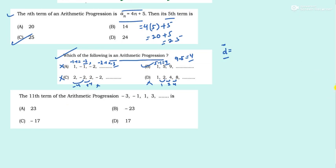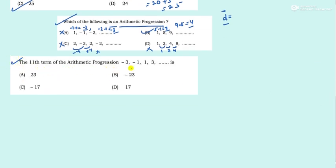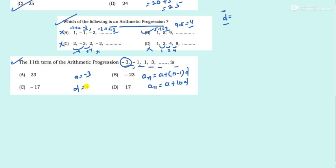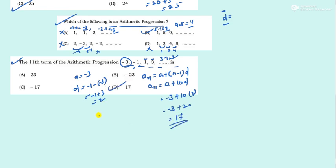Next question: Find the 11th term of an AP. Use the formula a_n = a + (n−1)d, so a_11 = a + 10d. Here a = −3, and d = a2 − a1 = −1 − (−3) = 2. Substituting: −3 + 10 × 2 = −3 + 20 = 17. Option D is correct.